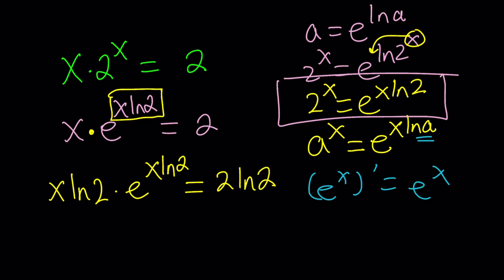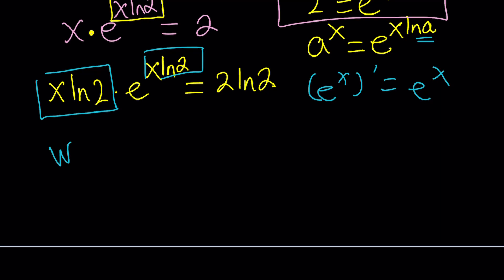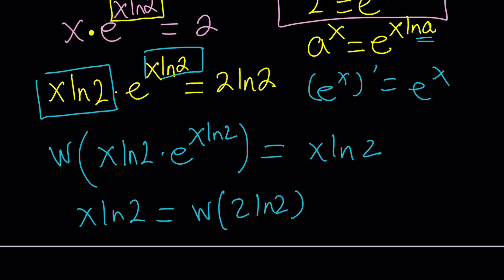Now, here's the good part. We now have t e to the t, and now we can Lambert this or W this. So W of x ln 2 times e to the power x ln 2 is just going to be x ln 2, and that's going to equal the Lambert W function of 2 ln 2. So in other words, x ln 2 is going to be Lambert W of 2 ln 2. But here's the problem. How do you Lambert this 2 ln 2?